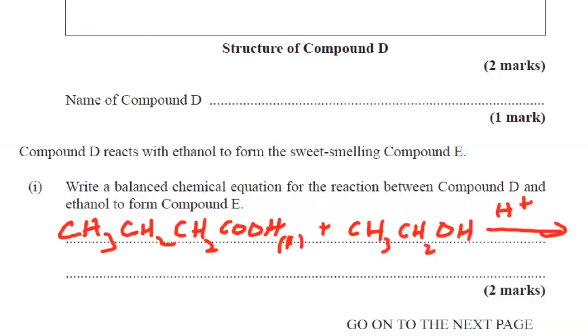Well, we need acid and we need reflux. That's the condition and the products will be CH3CH2CH2... Let's draw the acid portion first, forming the ester CH3CH2CH2COOCH2CH3.